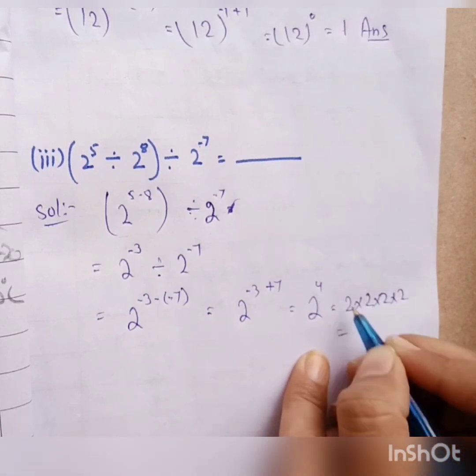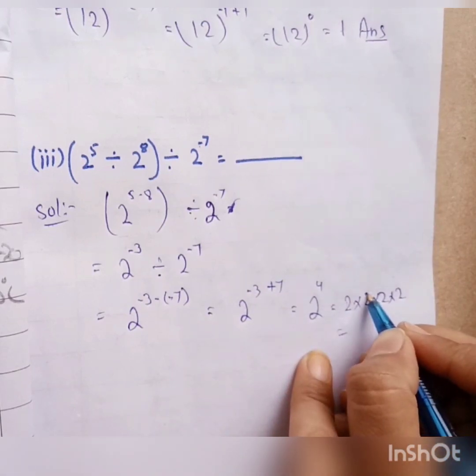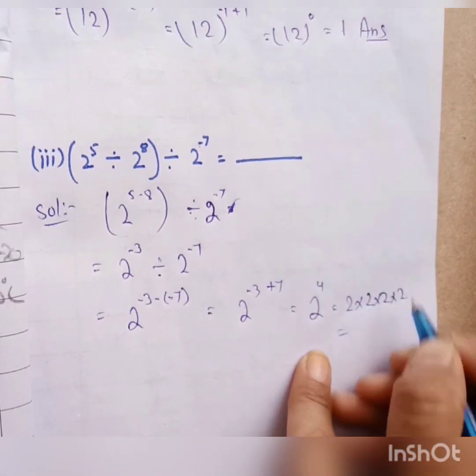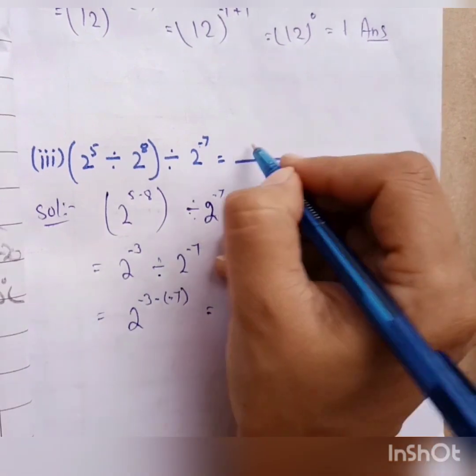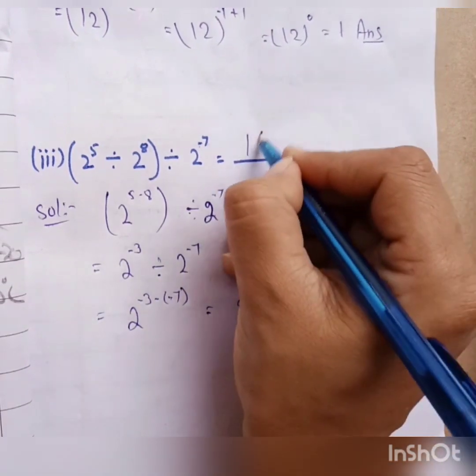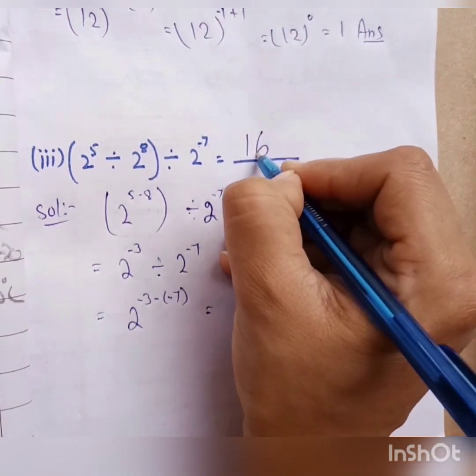We have minus three and plus seven, which means the power is plus four. Two multiplied by two is four, two are eight, two are sixteen. It means that in our blank, our answer is sixteen.